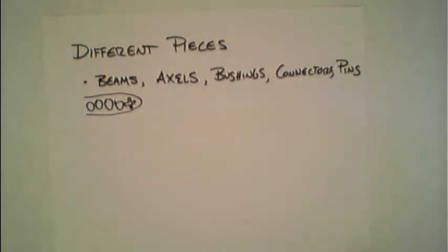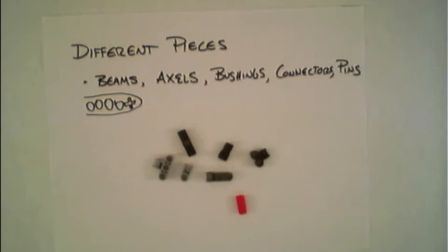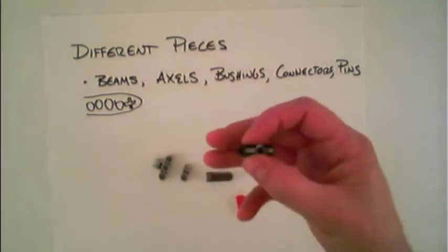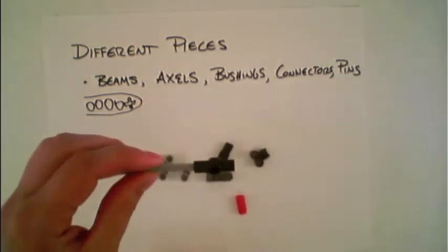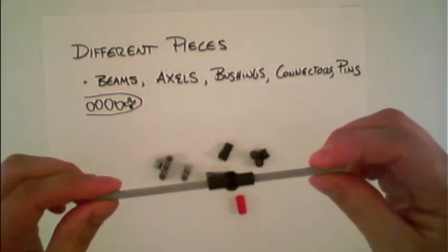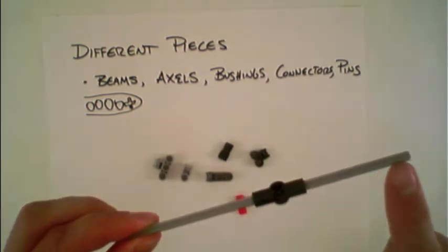In addition, there are a whole variety of different types of connectors that are available as well. Some of these, for instance, this one here is very helpful for actually taking two axles and combining them together. This helps if there's a far distance that you're trying to reach and one axle doesn't do the job.